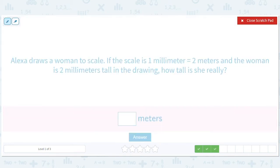One millimeter is to two meters. So I'm kind of thinking of this as an analogy. And a woman is two millimeters big in the drawing. So how tall is she really? So what do we have to do? Well, we have to multiply this by two. So we have to multiply two by two and we should get four.